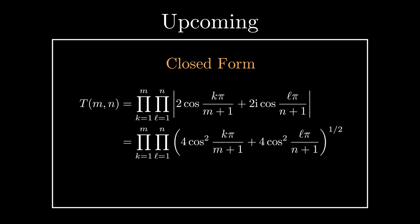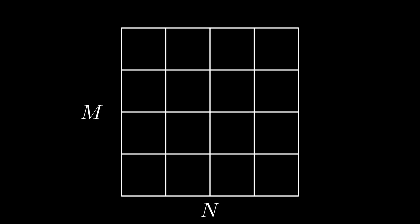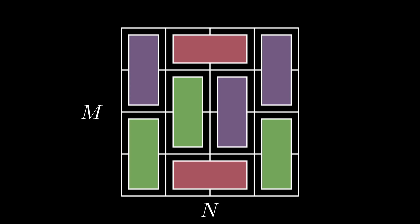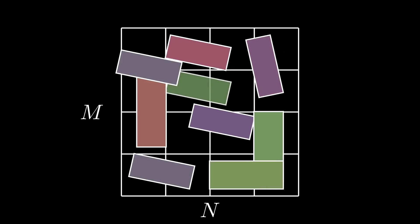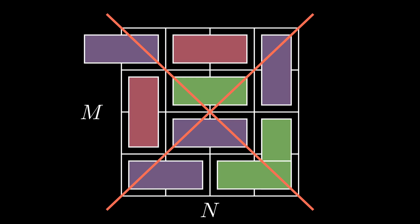Let's read the question. Consider an m by n grid. Let's consider 2 by 1 dominoes. A tiling is defined as some placement of these dominoes that covers every single square on the grid with no overlaps, no diagonal placements, and no protrusions. For example, this is a tiling and this is not a tiling. The question is pretty straightforward: how many possible ways can you do this?